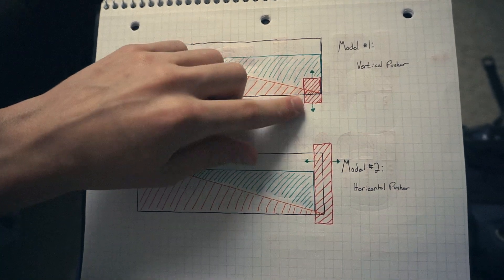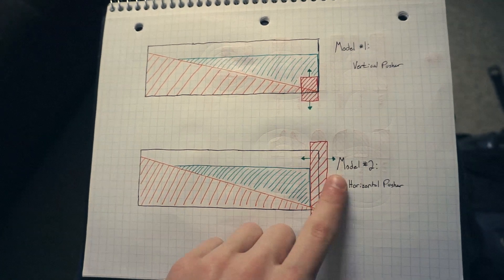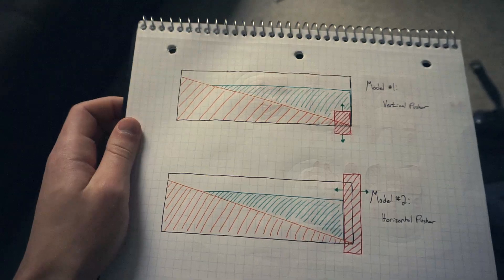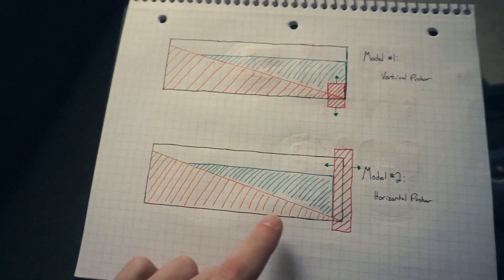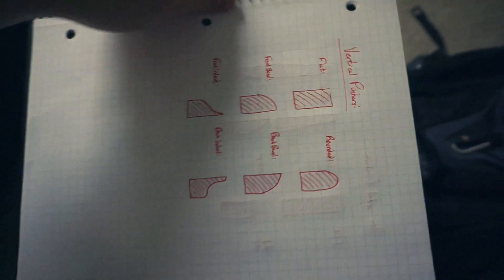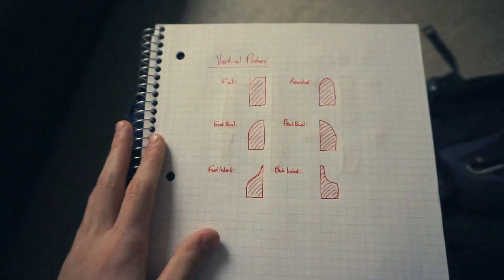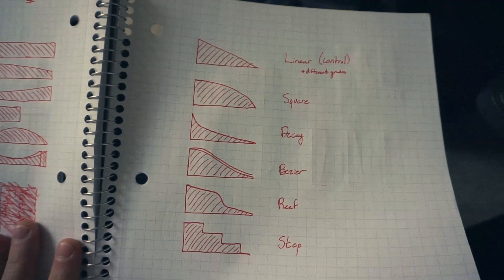In Model 1, the pusher moves vertically, causing the waves that way, whereas in Model 2 it moves left to right, or horizontally. There are two main variables I can change in each model: one, the shape of the pusher, and two, the shape of the sea floor. For the sake of diversity, and in hopes that one of these would produce a better result than the standard flat pusher, I ended up creating six different variations of each pusher for each model. I also created six different sea floor variations to test which one formed waves the best. Now it's time to put these different models and variations to the test.